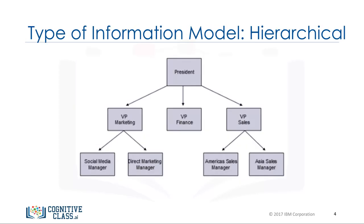There are several types of information models. The most familiar is the hierarchical, typically used to show organization charts. As shown in this figure, the hierarchical model organizes its data using a tree structure. The root of the tree is the parent node, followed by child nodes. A child node cannot have more than one parent; however, a parent can have many child nodes.